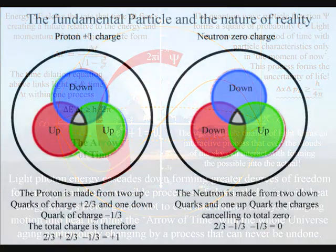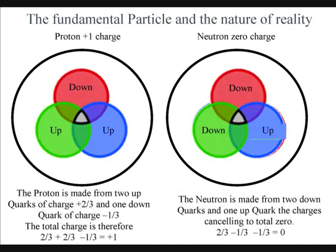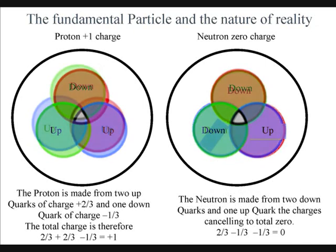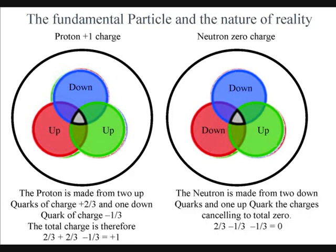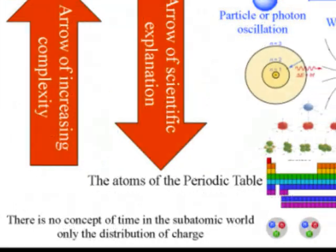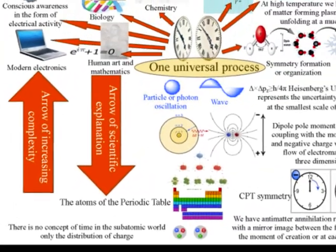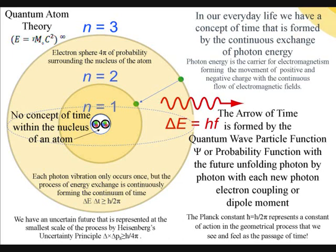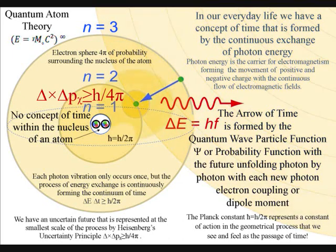There is no concept of time at all in the subatomic world, within the atoms. All we have is the distribution of charge into three parts, representing three-dimensional space. This is because the continuum of time is formed by light waves interacting with the electron-probability cloud that surrounds the atoms.